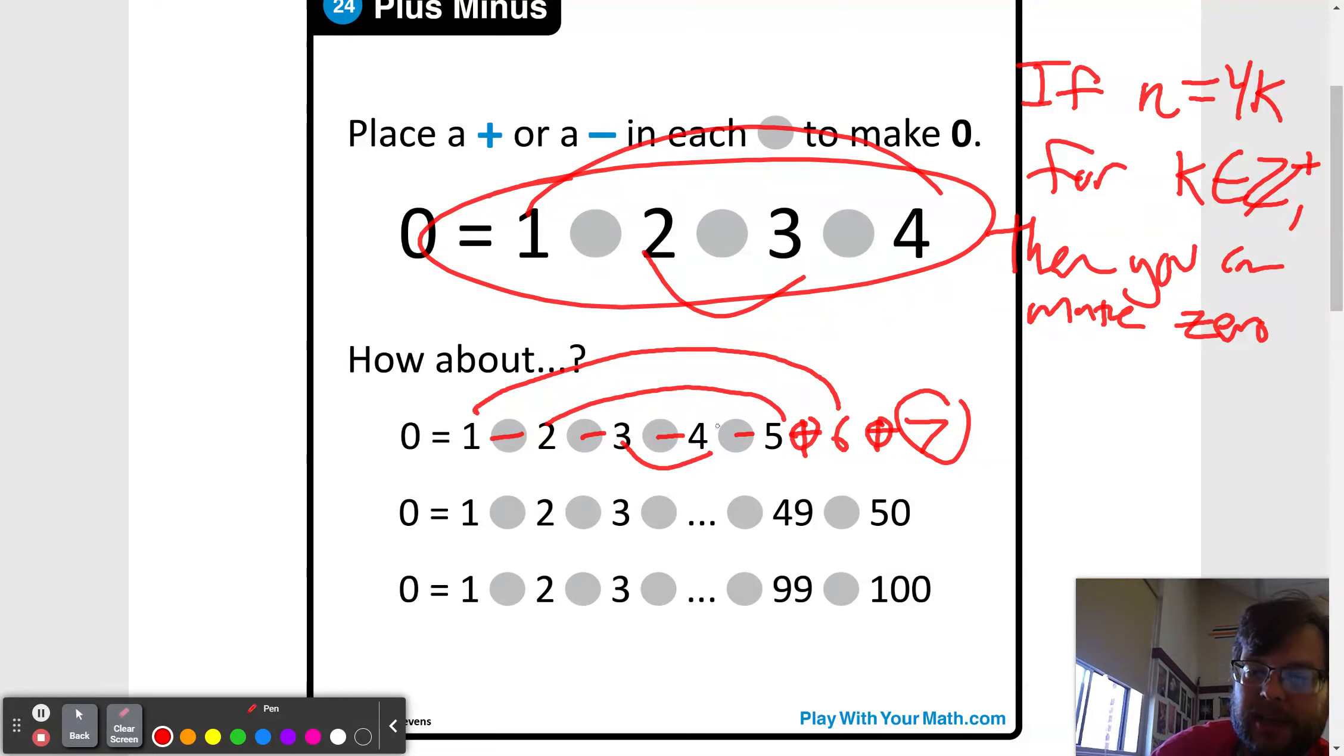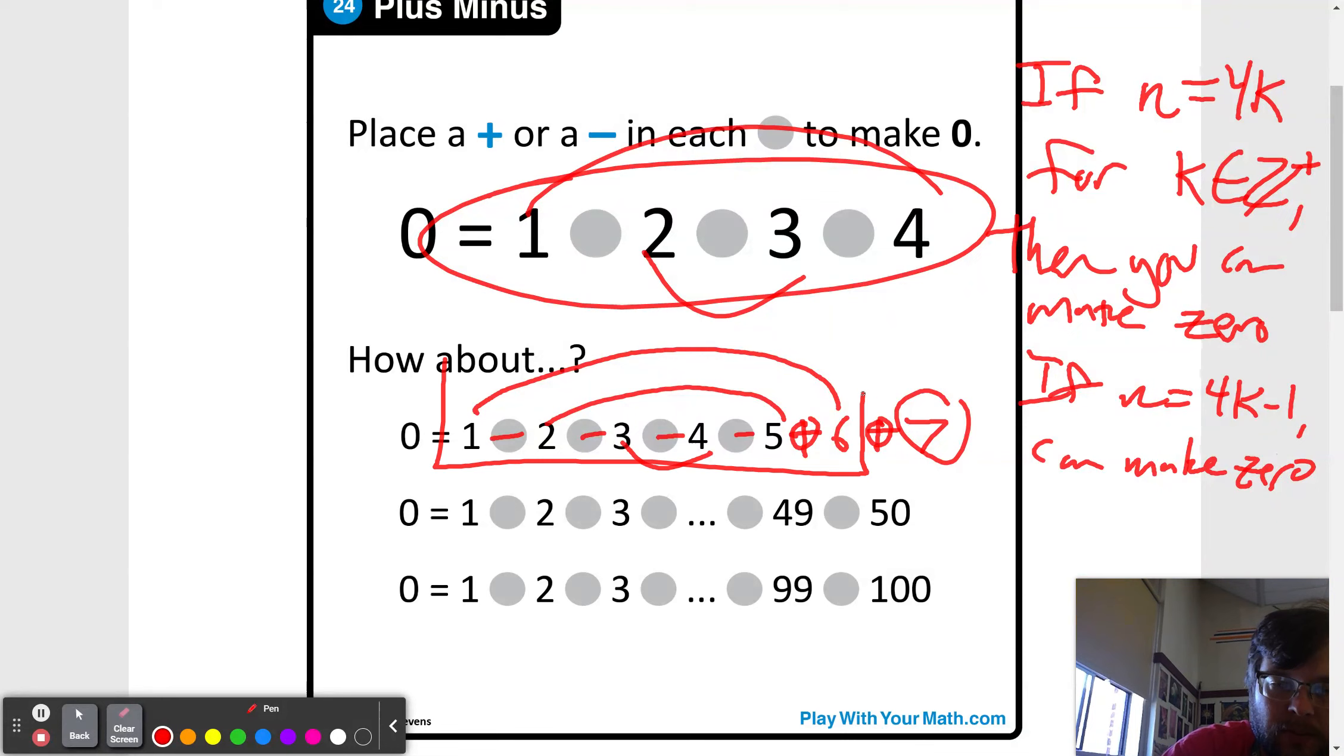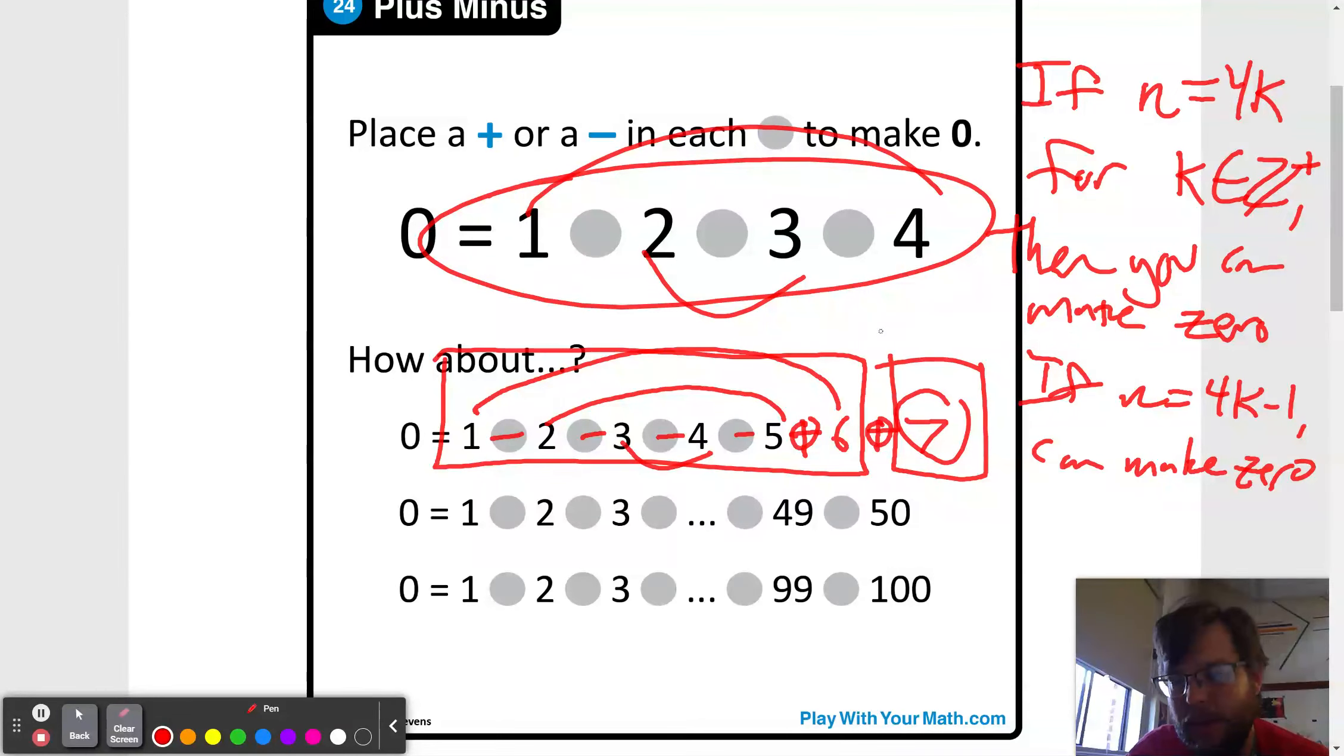So then we had another conjecture that if n equals 4k minus one, can make zero. And the idea there is that the previous ones are all pairs that match up with the last term right there. And then we suggested that there was no other way to make zero after that.